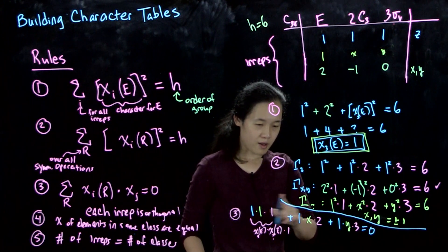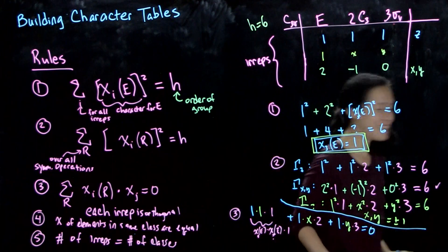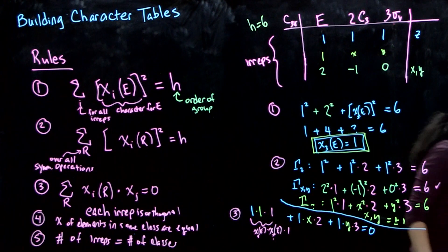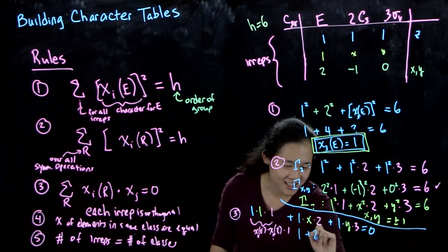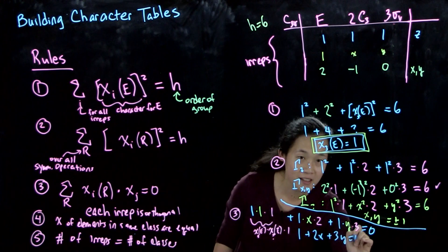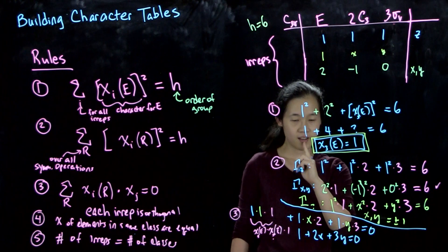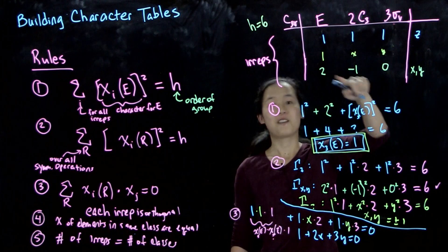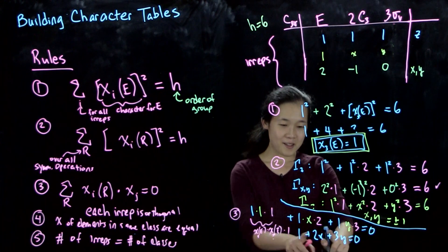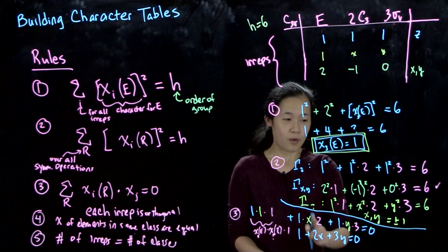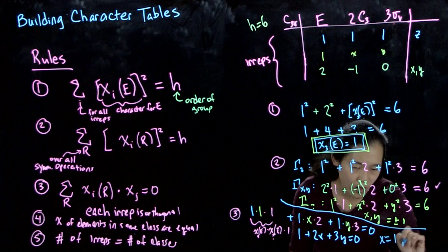And then we know that this has got to be all equal to zero, because they're orthogonal. So now we know that one plus two x plus three y equals zero. And there we have it. So if you were to solve for this now, we know that x and y are both plus or minus one. So then we can say that x equals one, and then y equals minus one.